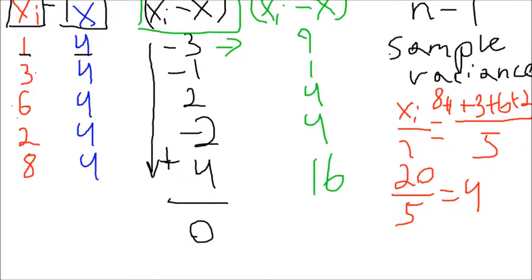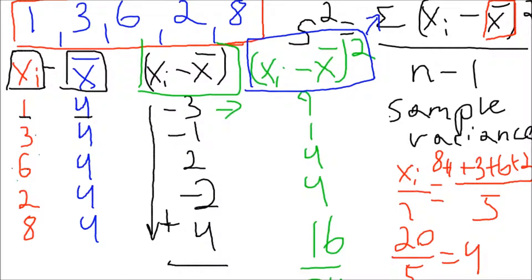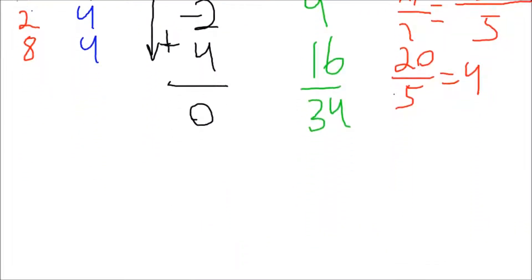So, now if we add up all of these numbers, 9 plus 1 plus 4 plus 4, that's 18, plus 16, that's 34. So, what we did here is we actually took the sum of this term right here, which is actually this term up here in the numerator here for our sample variance.